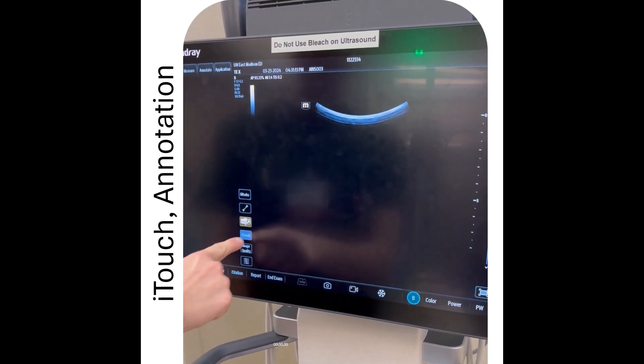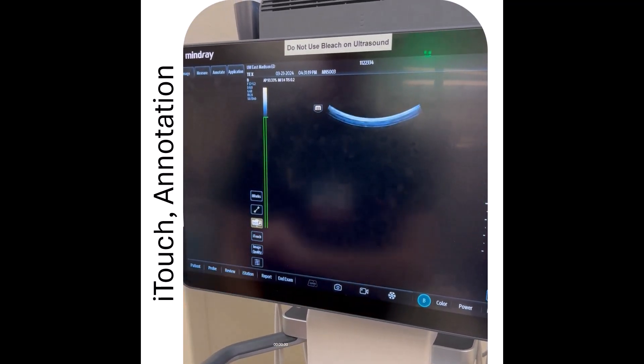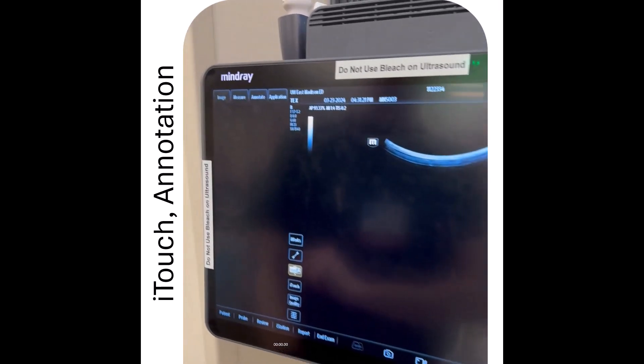Now we'll talk about iTouch. This is an auto-gain feature. So to turn it on, you're going to press it once. To turn it off, you're going to press and hold, and that will essentially adjust your gain as you're scanning.